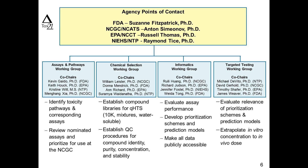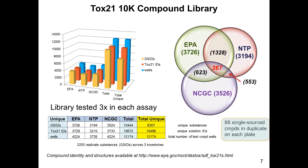The assays and pathways working group identifies which assays to run and reviews performance. The chemical selection group manages the chemistry side, ensuring understanding of what's been tested. The informatics group analyzes what the data says about next steps. The targeted testing group evaluates the in vivo relevance of results. The Tox21 10K library is comprised of differing numbers of chemicals depending on timeline — chemicals were nominated by EPA, NTP, and NCGC, with essentially 8,300 unique compounds in the primary library set.